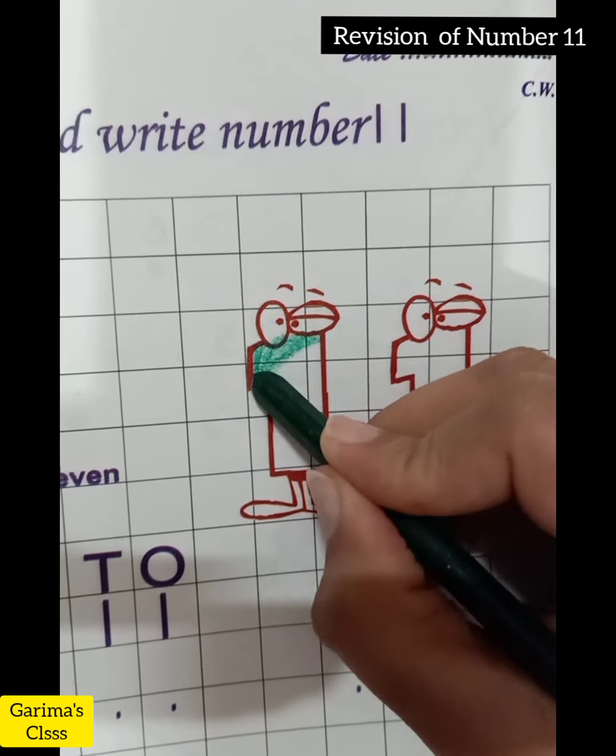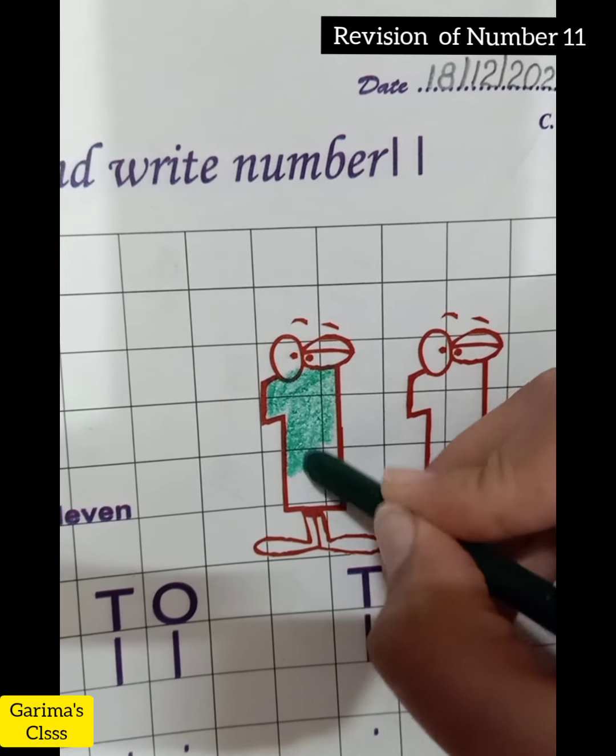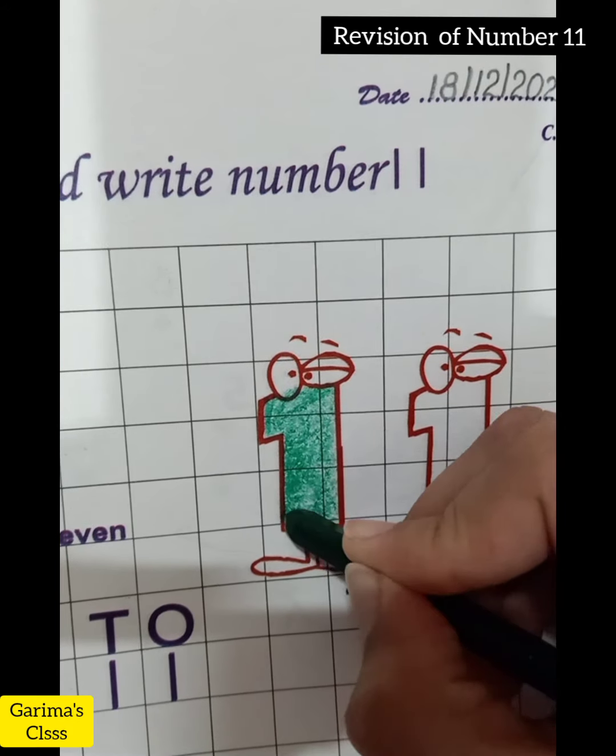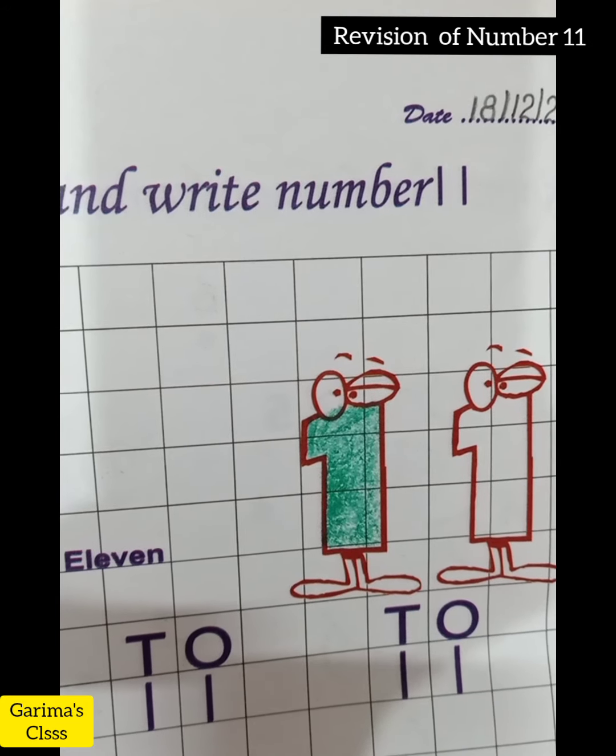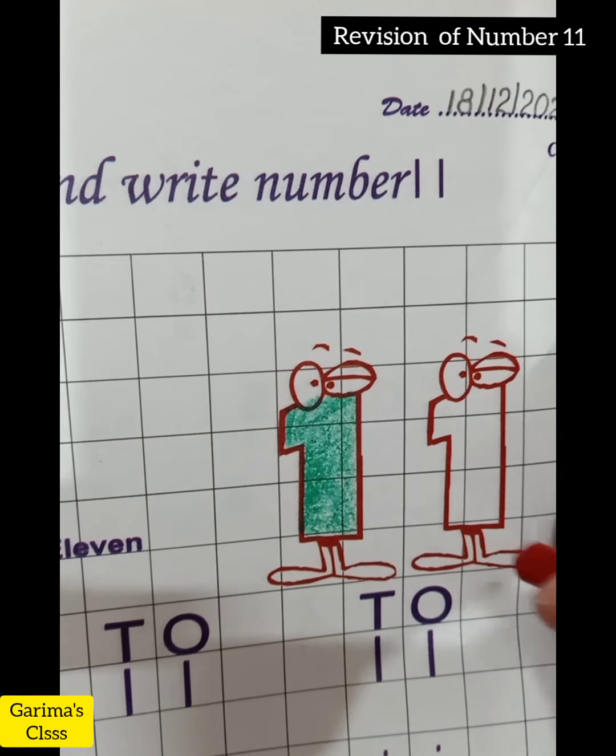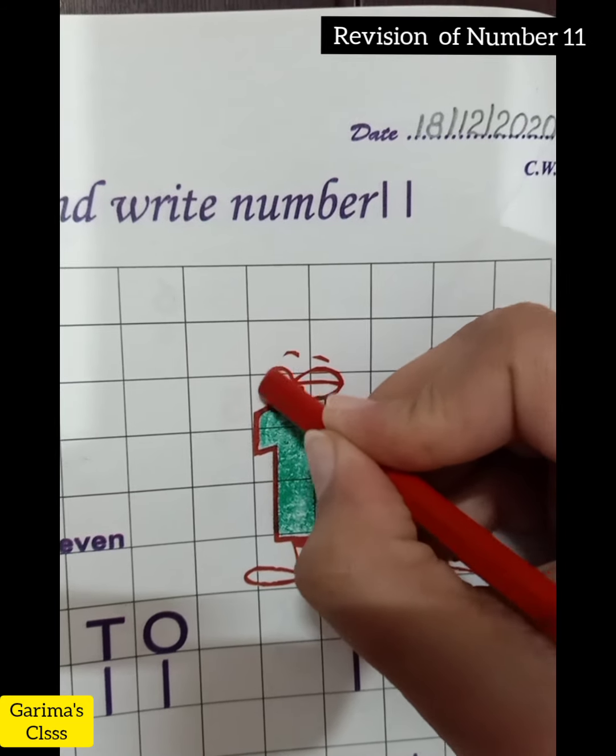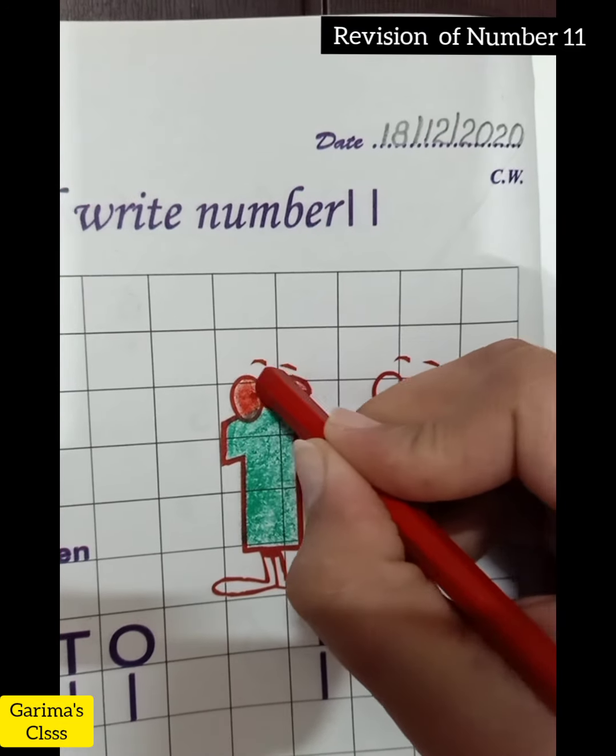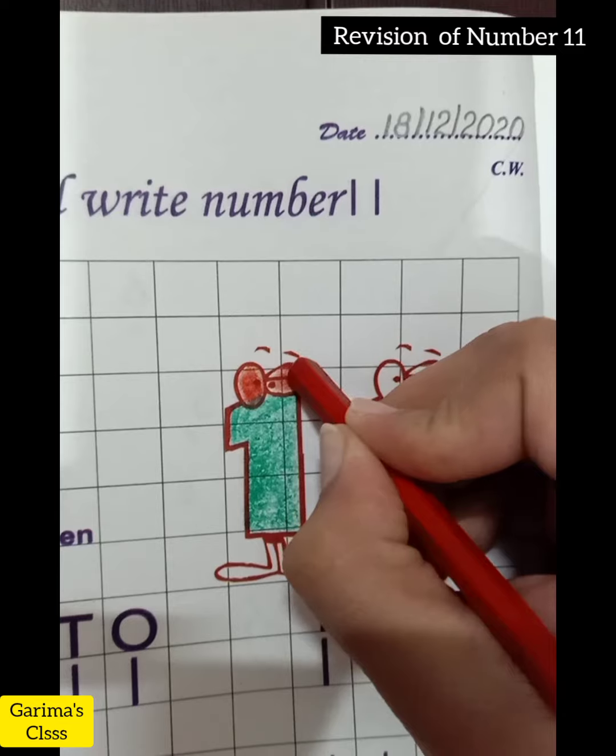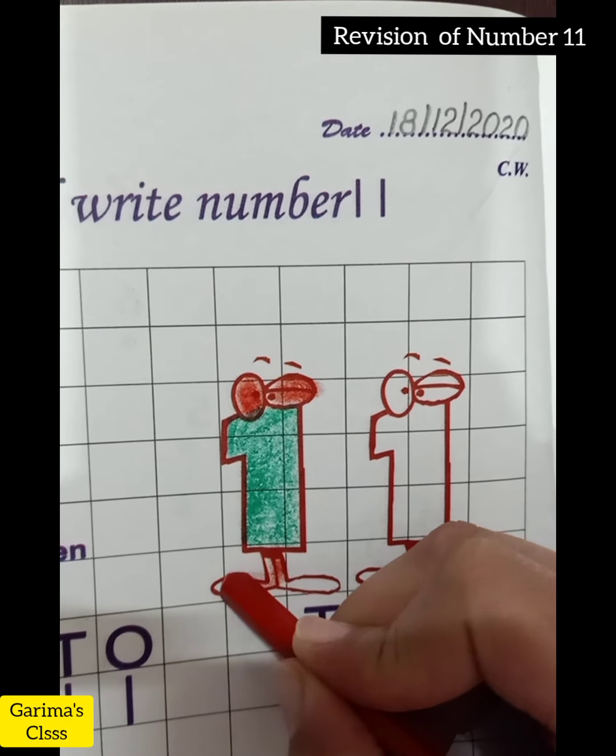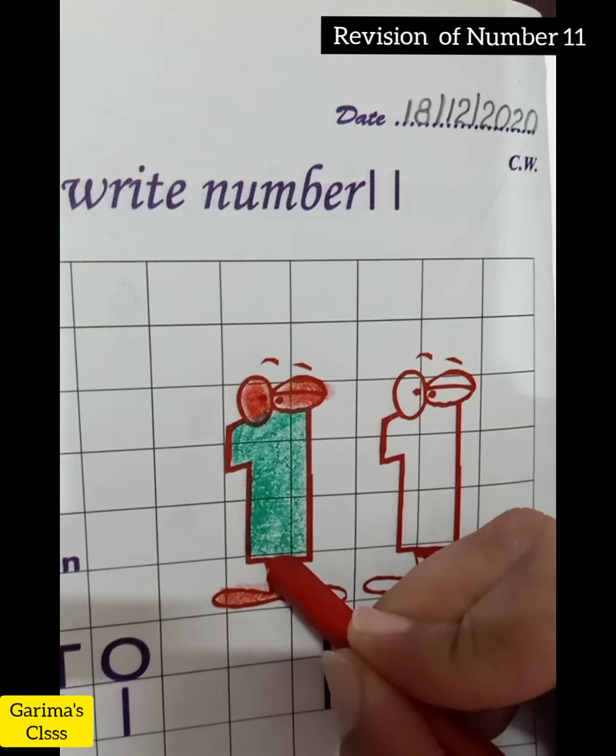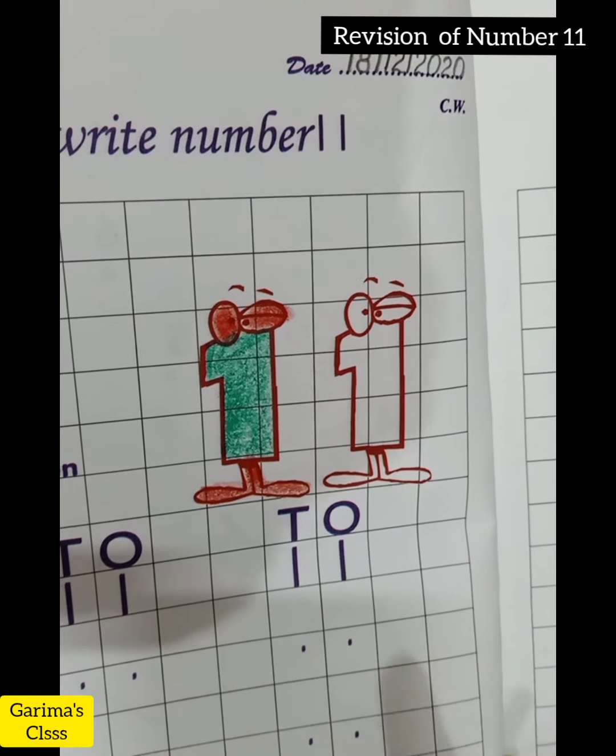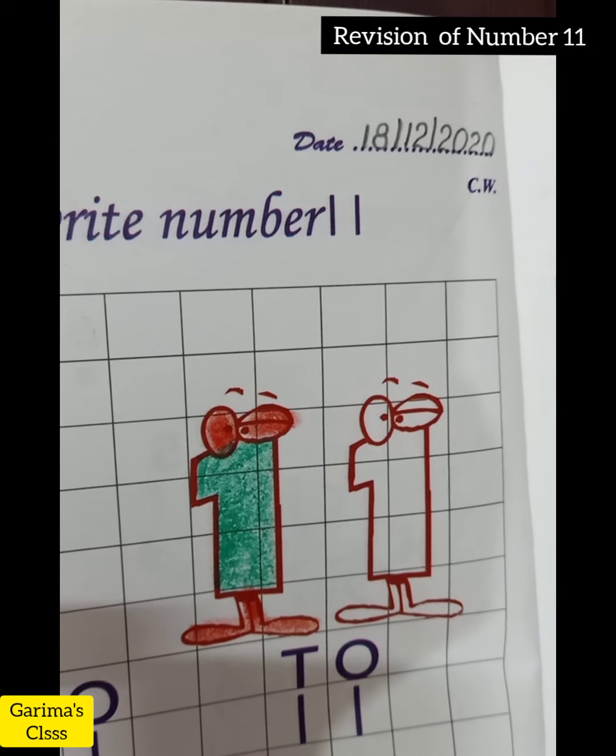Kids, aap aapni choice se koi bhi two color lese akte hai. You can choose any two colors of your choice. Now we'll color the first number one. We'll color the legs.